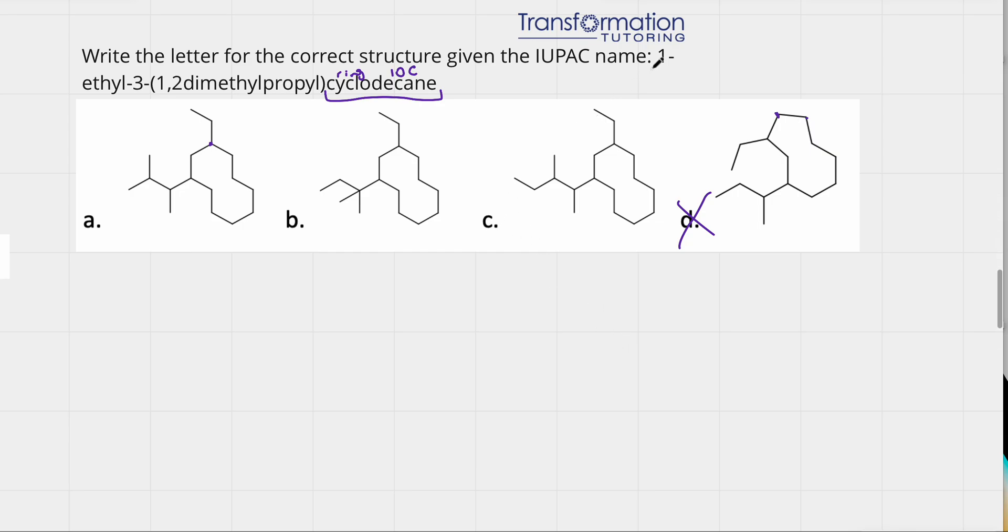Next, I have 1-ethyl-3-something. So on carbon number 1, I have an ethyl group. And on carbon number 3, I have another group, 1,2-dimethyl-propyl. So if I go 1, this is where my ethyl group, it would be 1 for all of them.